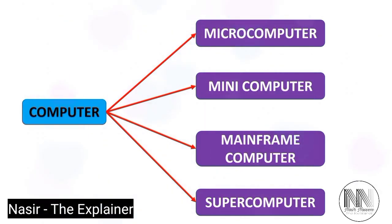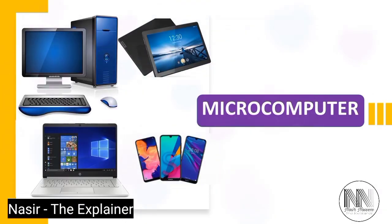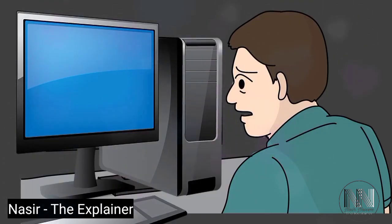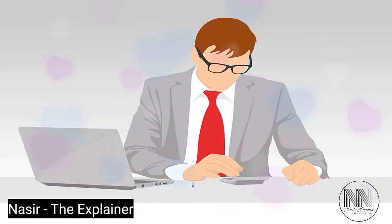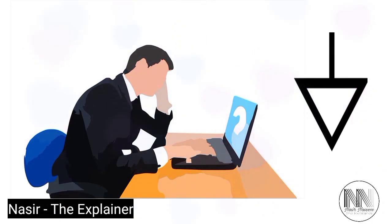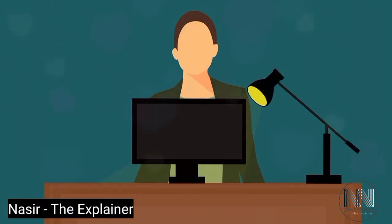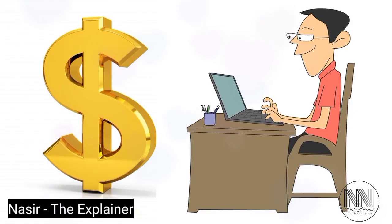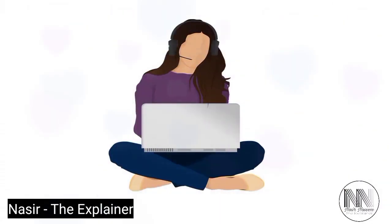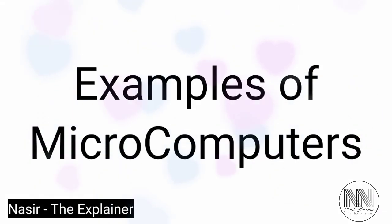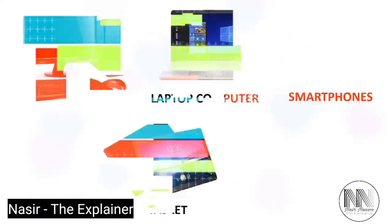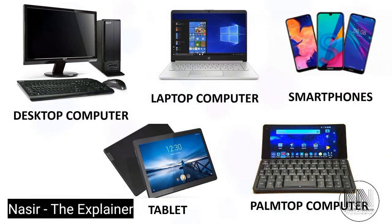The first category is micro computers, also known as personal computers, because this computer only handles one user at a time. These are the basic type of computer and low in processing power. These are also the cheapest form of computer. Different examples of micro computers are desktop computers, laptops, smartphones, palmtops, and tablets.